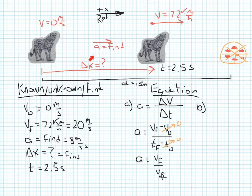And in other words, what we're trying to find here is, does the cheetah actually reach the 15 meters before or after it reaches the 72 miles or kilometers per hour? So we're going to have to think about how to find delta x.